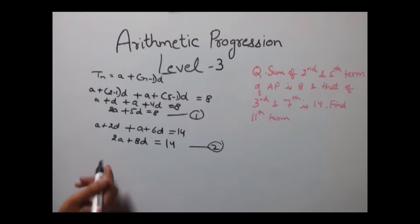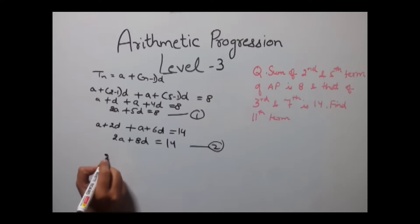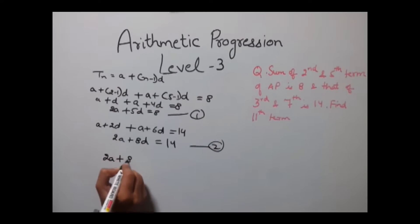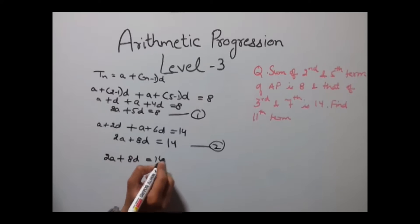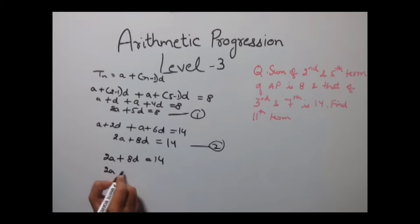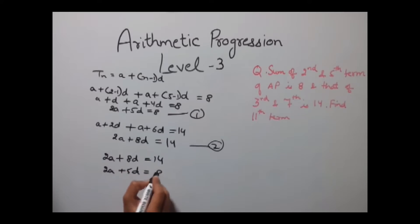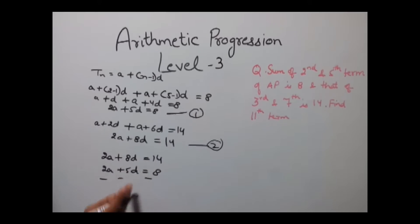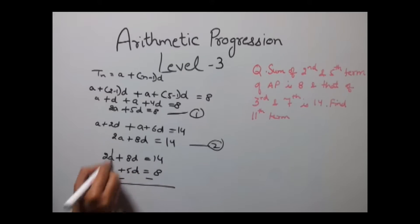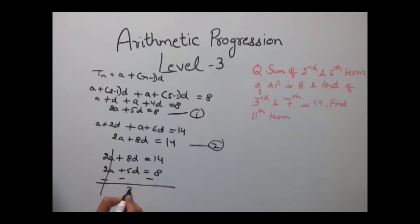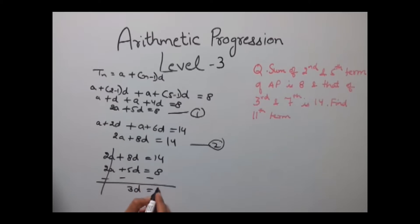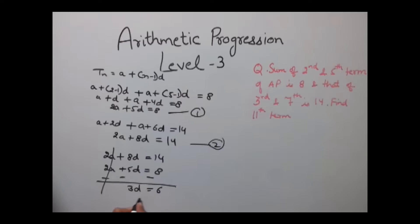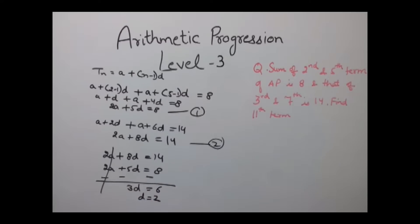Solving these two equations — 2a + 8d = 14 and 2a + 5d = 8 — we subtract the first from the second: (8−5)d = 14−8, so 3d = 6, giving us d = 2.